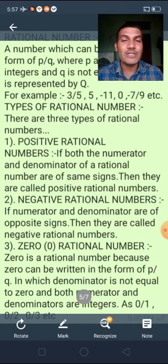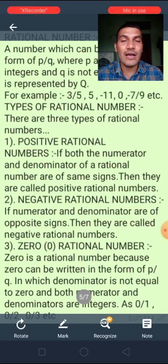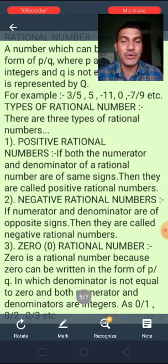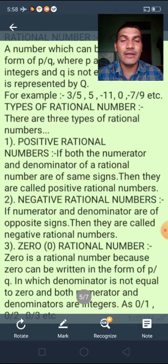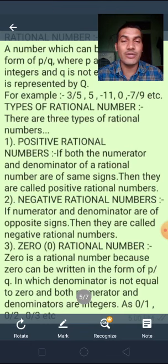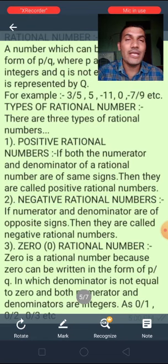Third is zero rational number. Zero is a rational number because zero can be written in the form of P/Q in which the numerator and denominator are integers and the denominator is not equal to 0, as 0/1, 0/2, 0/3 — we can write it.